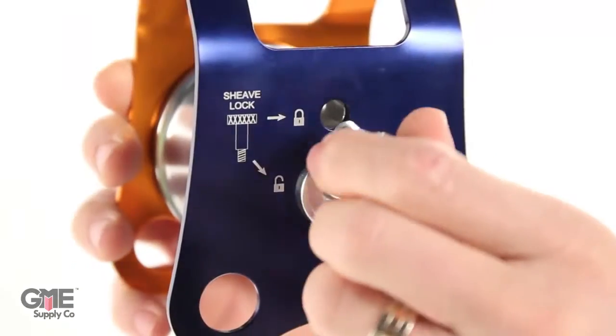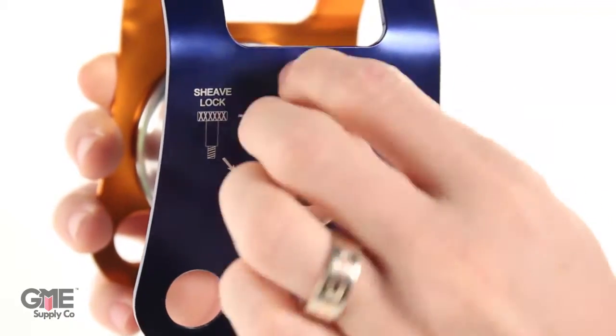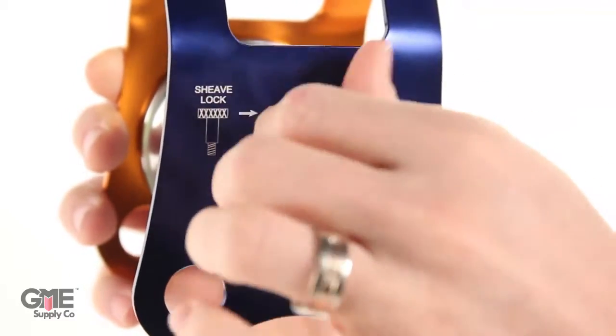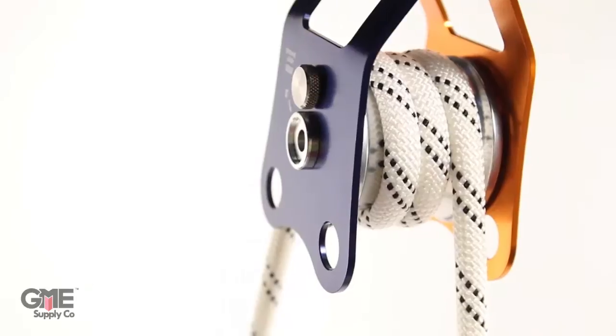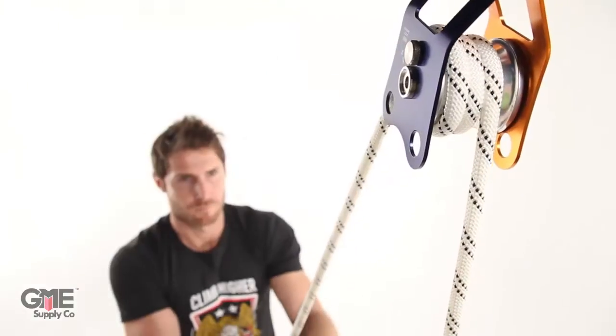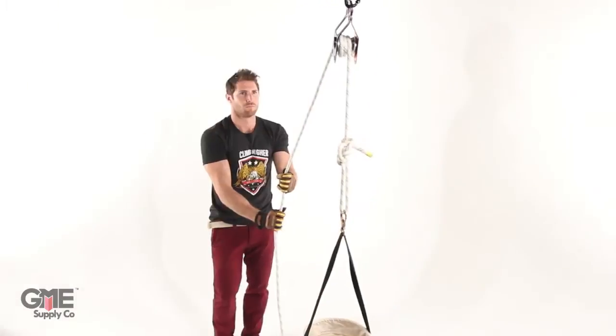The sheave lock feature allows for a high strength tie-off. Simply move the lock screw, which is stowed in the axle, to this position. Then wrap the rope around the locked sheave several times. This also allows you to lower heavy loads easily.